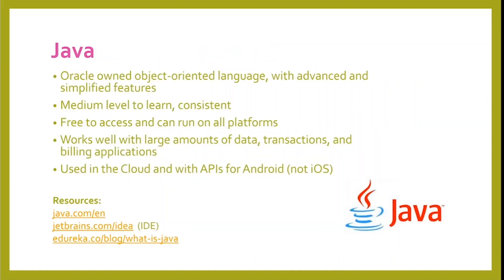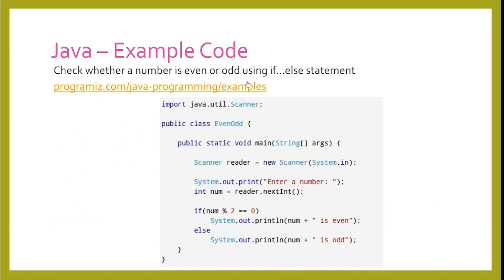Our next language is Java. Java is an Oracle-owned, object-oriented language with advanced and simplified features. It's medium level to learn and consistent. It's free to access and can run on all platforms. It works well with large amounts of data, transactions, and billing applications. It's used in the cloud and with APIs for Android, not iOS, which is Apple. Here is an example of Java code used to check whether a number is even or odd. It uses an if-else statement, which is called a condition — you can also call it logic.